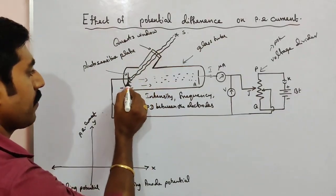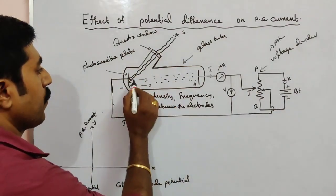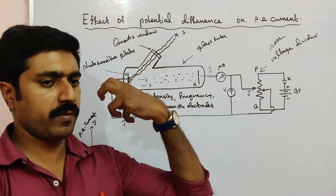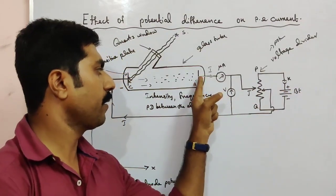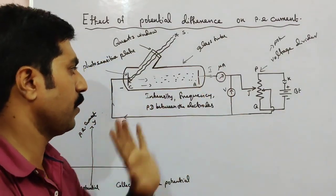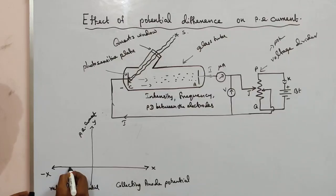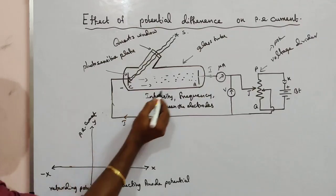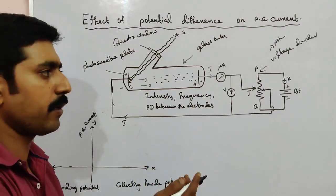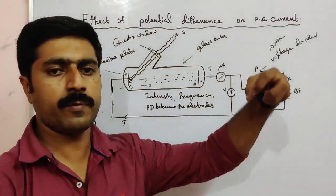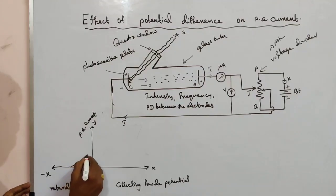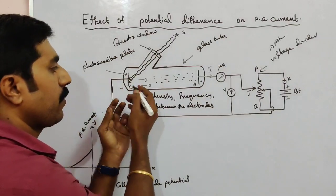We have the same intensity, and we have the electrons. All electrons are attracted in this circuit — this is what produces the photoelectric current. When we apply a negative potential and then increase the positive potential of the anode, increasing, increasing — the current value increases.